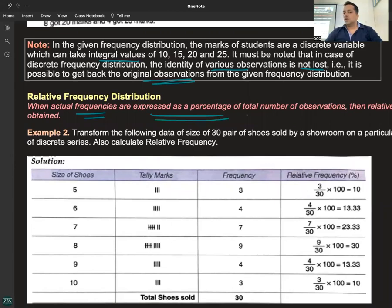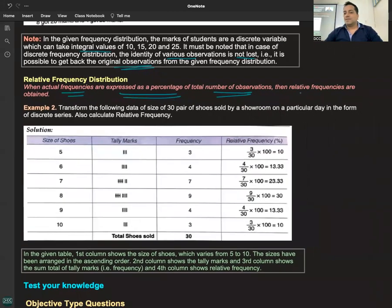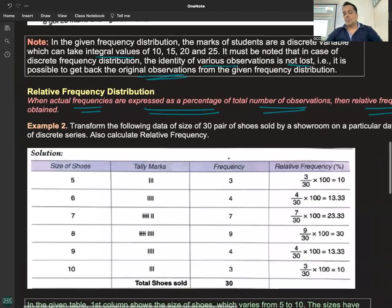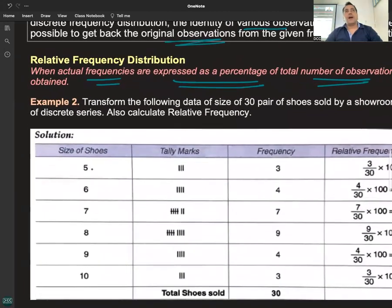For example, shoe size 5 - how many children have this size? 3 children. Total how many? 30. So what percentage does this become?